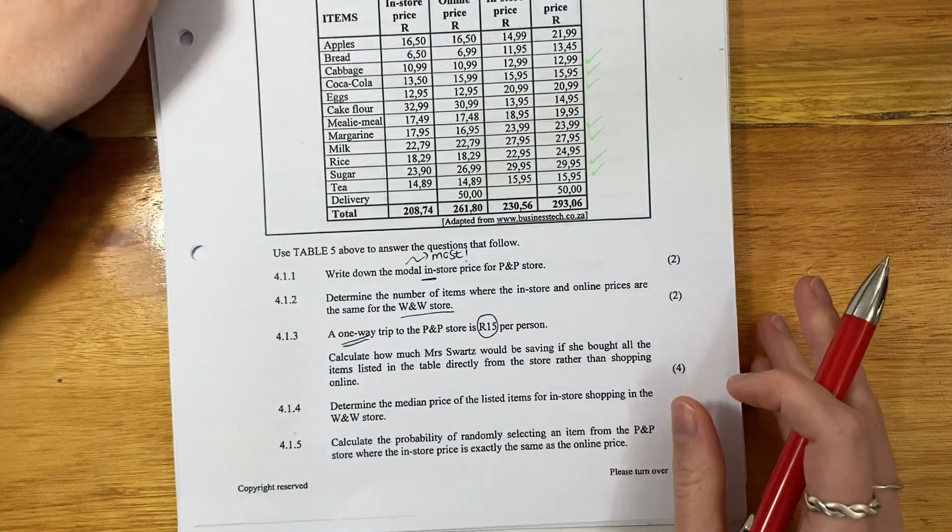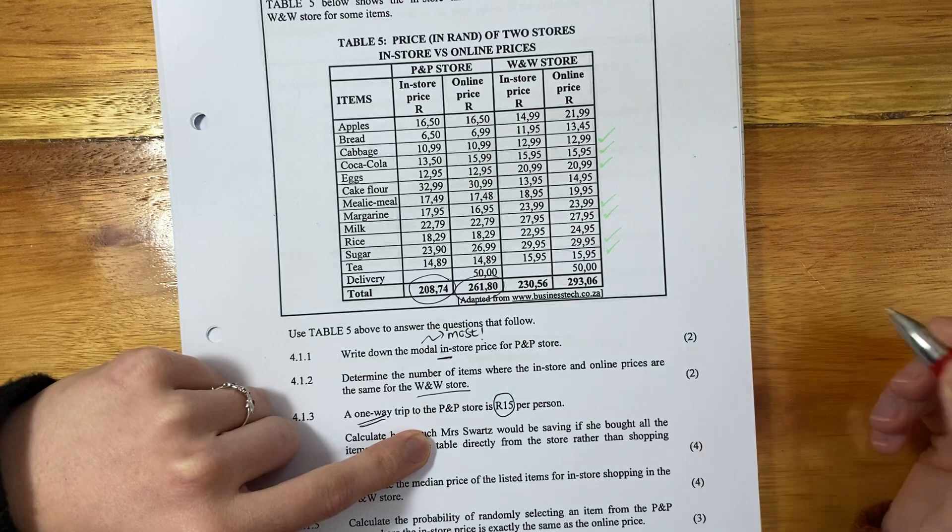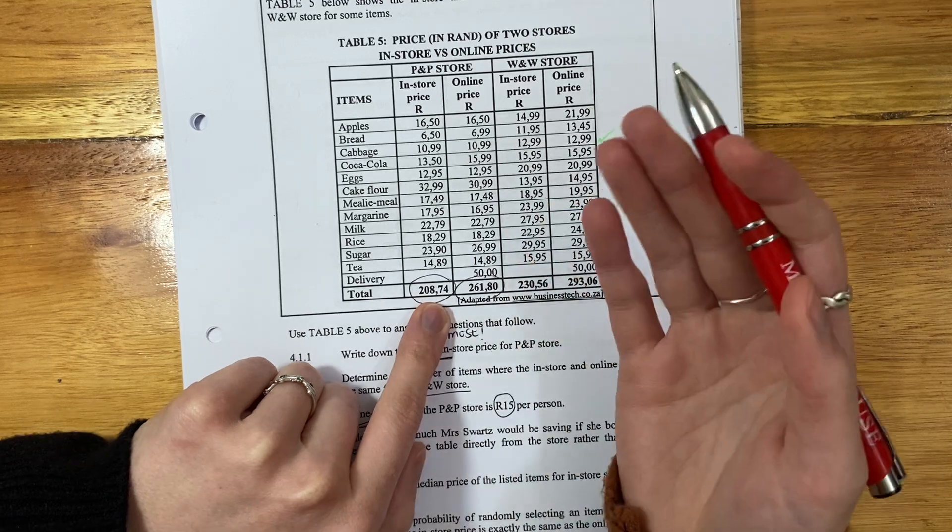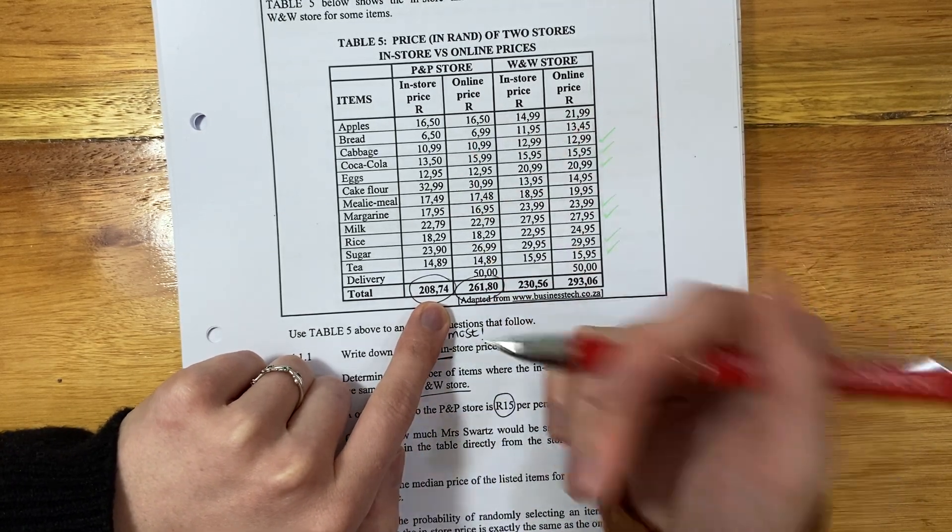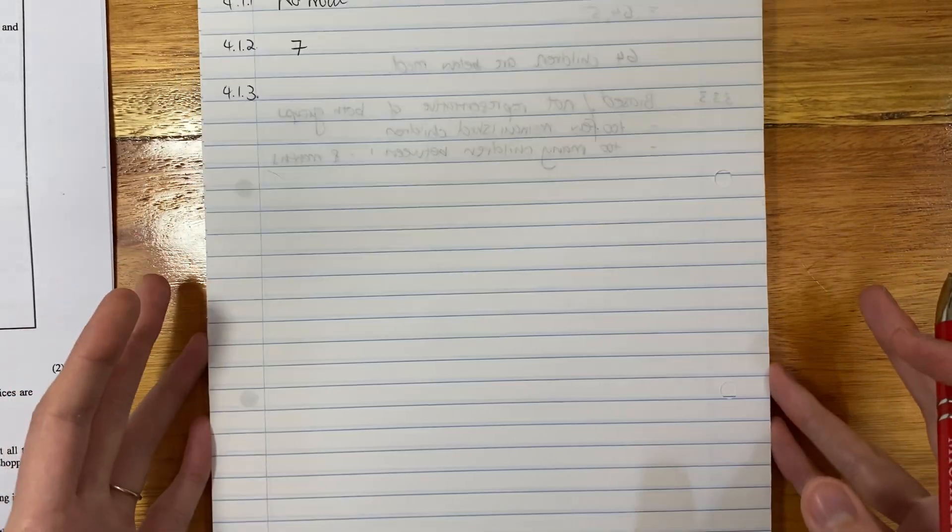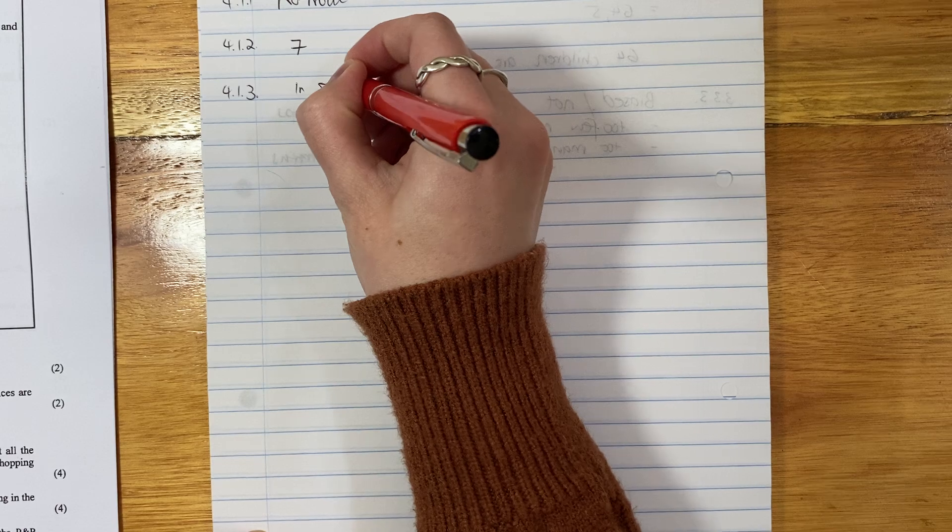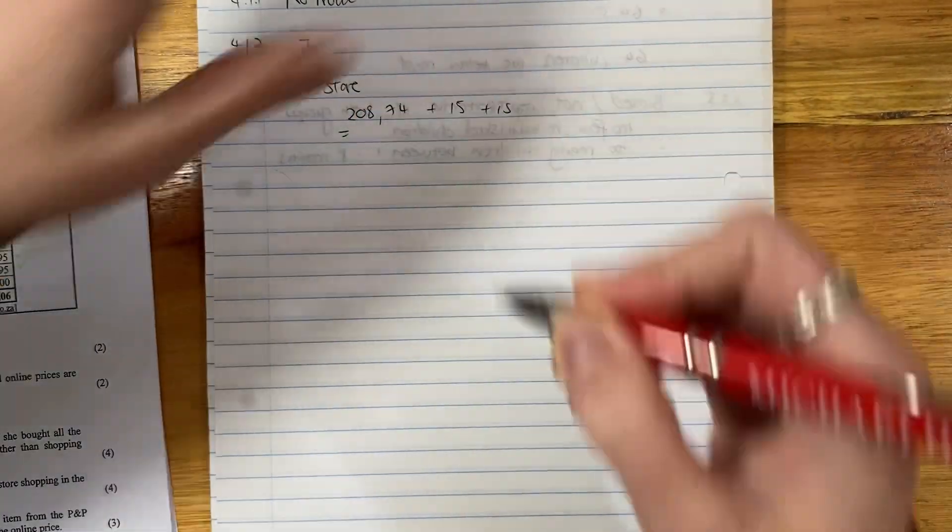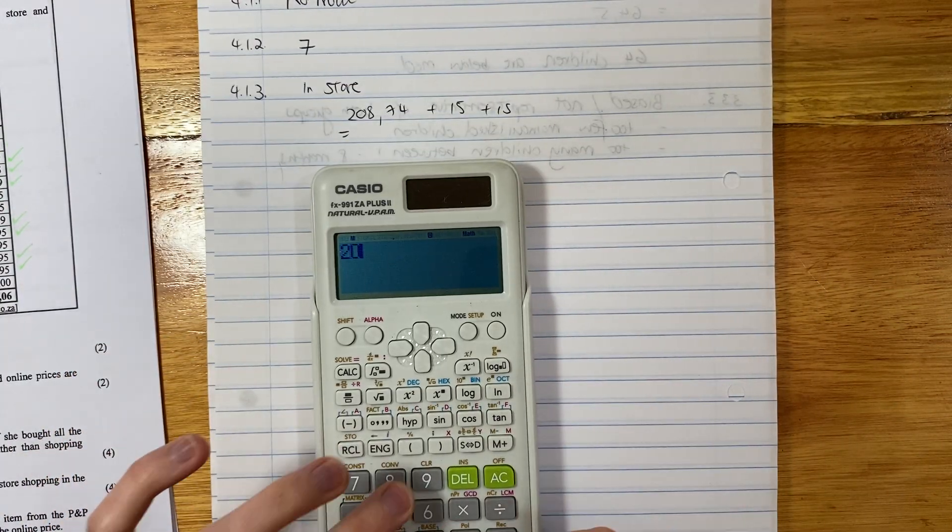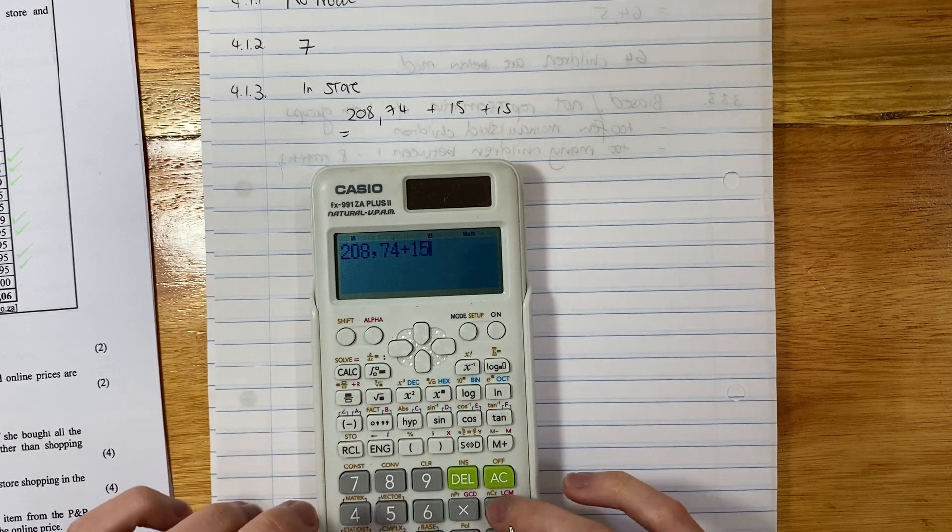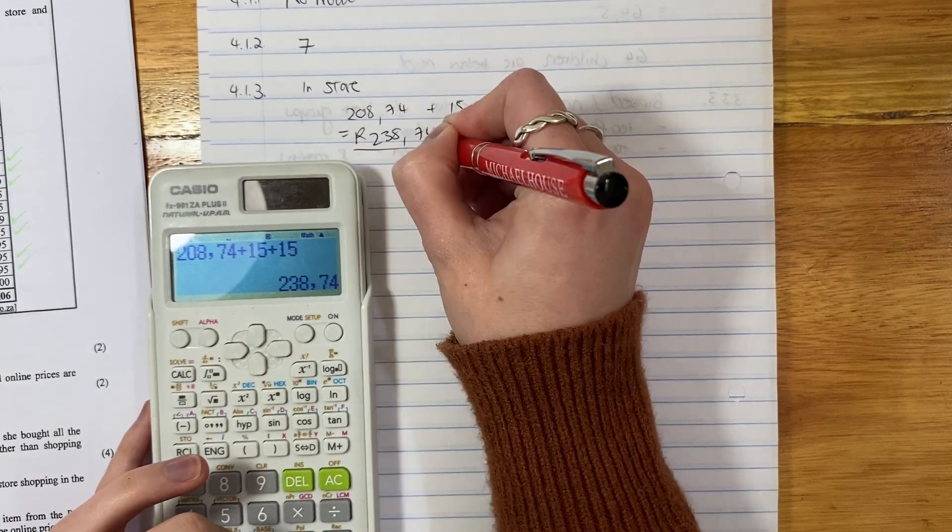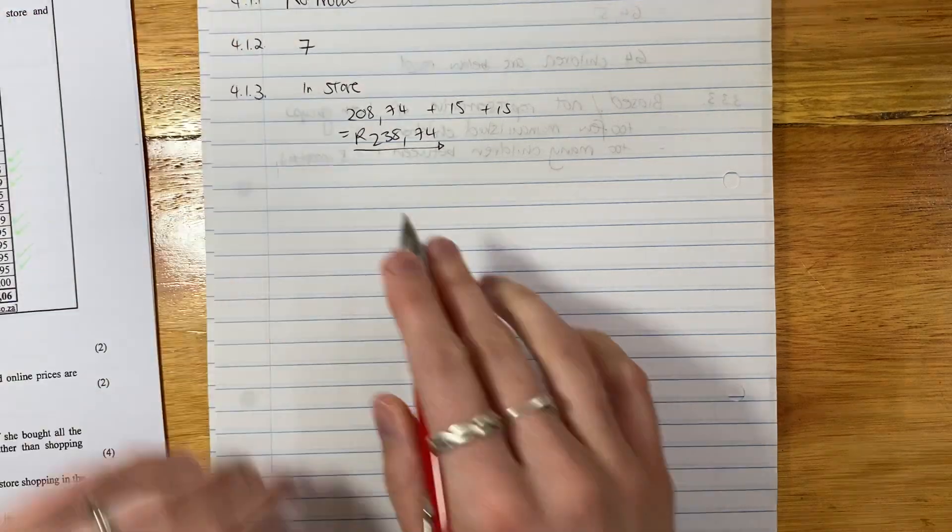We have to compare for P&P, in-store and online. But to get to the store it costs you something, 15 Rand there, 15 Rand back. Let's make sure we're doing this calculation correctly. In-store is going to cost me 208.74. Then it's going to cost me 15 Rand to get there and 15 Rand to get home. Put that in your calculator. 208.74 plus 15 plus 15. And it's going to be 238.74. Remember to put a Rand sign in.